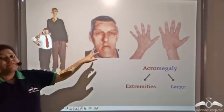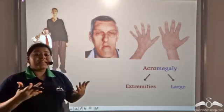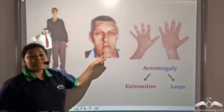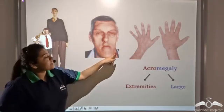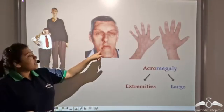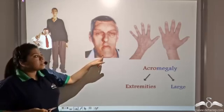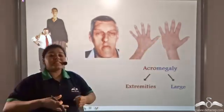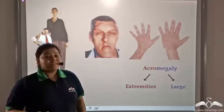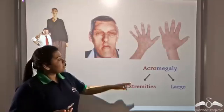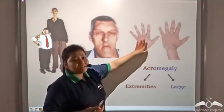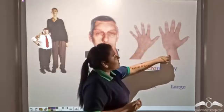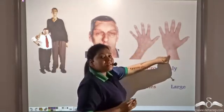But if the growth hormone suddenly increases in adulthood, the extremities of the body — like the nose, the chin, and the fingers — increase in size abruptly. This is a normal hand, and this is a hand of a person suffering from this disease.